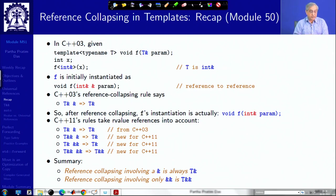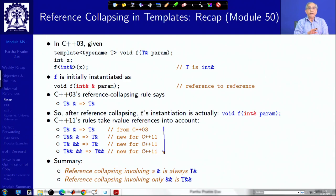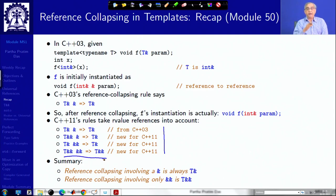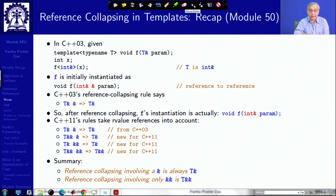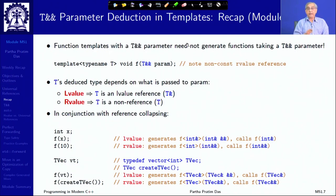We learned the collapsing rule: reference collapsing involving any L value reference will always collapse to an L value reference, and reference collapsing involving only R value references will collapse to an R value reference. So the only case where R value and R value collapse to R value; otherwise it will always be L value. We need to keep this in mind as it is typically used in template type deduction.